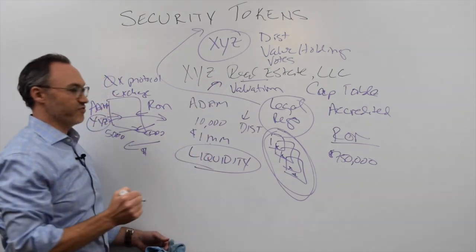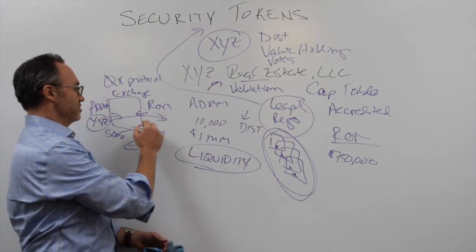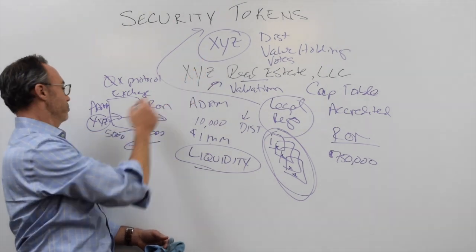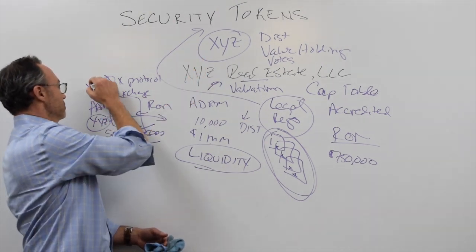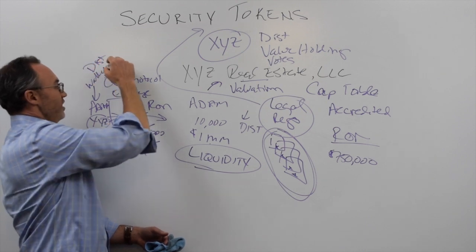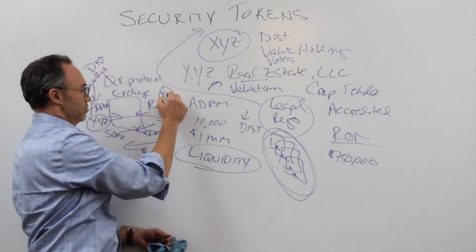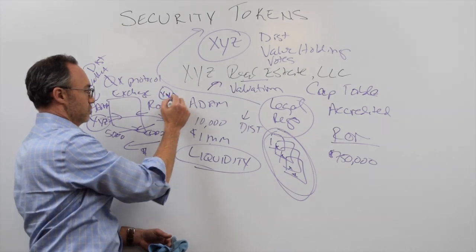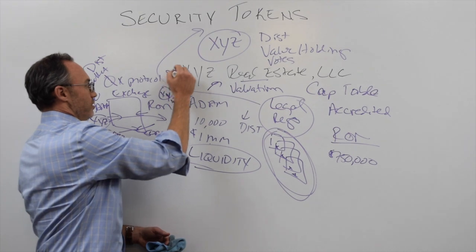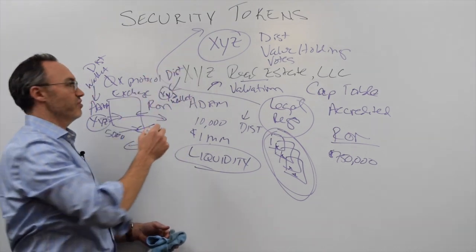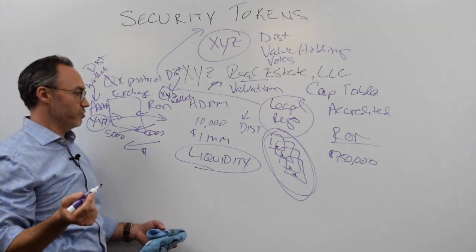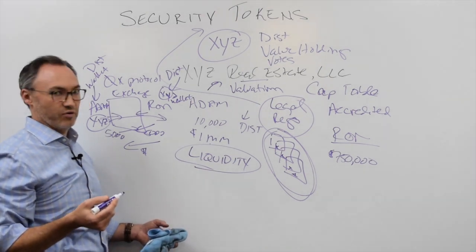The great part is now these tokens change hands, these 5,000 tokens, but XYZ real estate doesn't have to do a thing extra because everything is denoted in the token. In the past, they were just paying the distributions to my wallet. And now half the distributions are just going to Ron's wallet. And they didn't have to do anything because it was all done on the token. It was all done on the blockchain. That's the beauty of the security token.